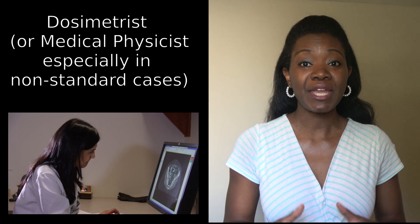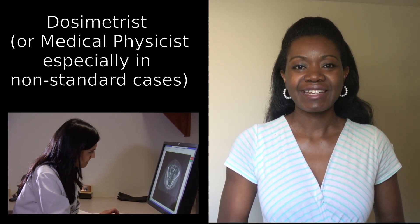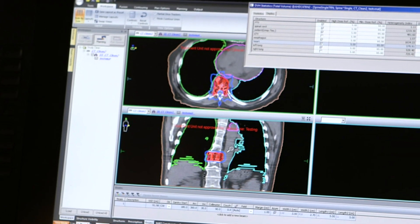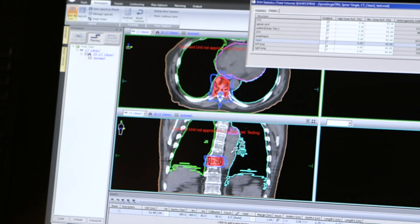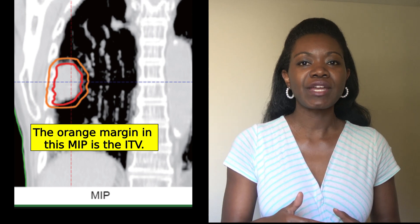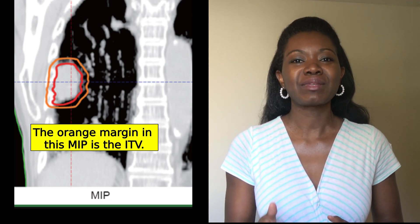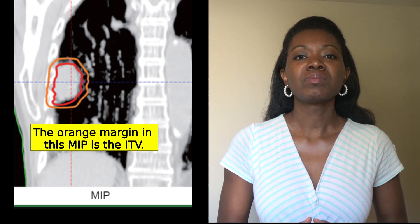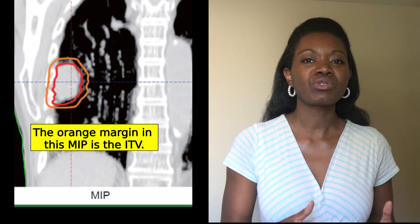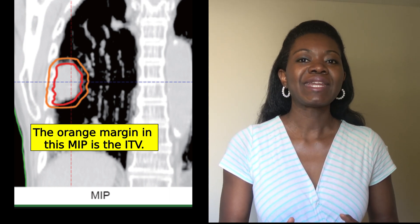To give you a better sense of the workflow: the dosimetrist is the first person to receive the image sets once the patient has been simulated, or undergone a CT scan. They are in charge of outlining normal organs and designing the radiation treatment plan. However, they rely on the radiation oncologist to contour the tumor and define margins, as those affect how the plan is designed. Larger tumor margins may make it more difficult for the dosimetrist to spare normal tissue — that's why using MIP to create ITVs can be very useful.